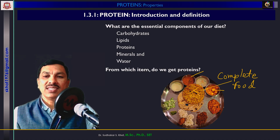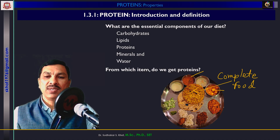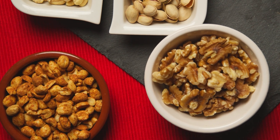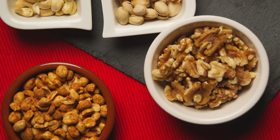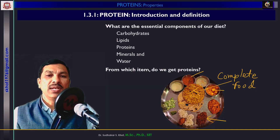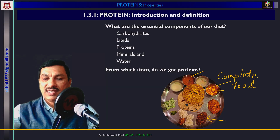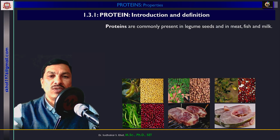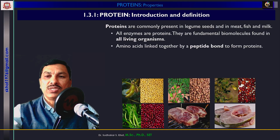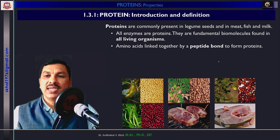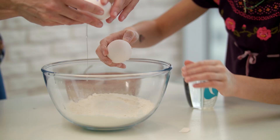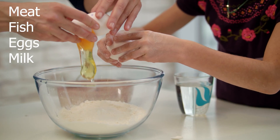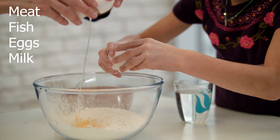In addition, we can get proteins from legumes, from milk, milk products, and in case of animal sources, we will get proteins from meat, fish, and milk.